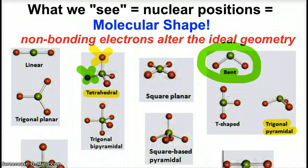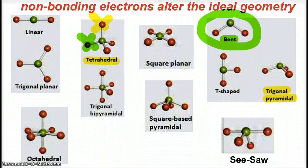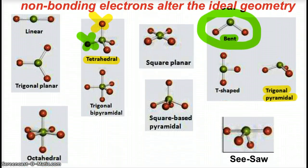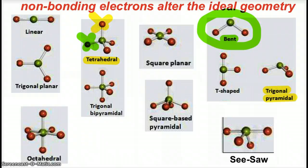From our ideal geometries we get some of these other shapes like seesaw, square-based pyramid, T-shaped, bent, or trigonal pyramidal.